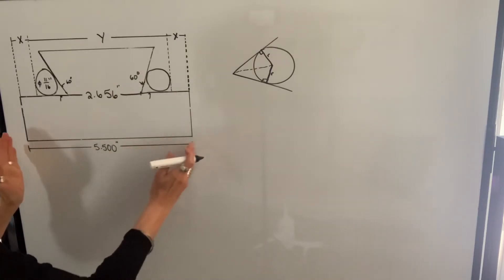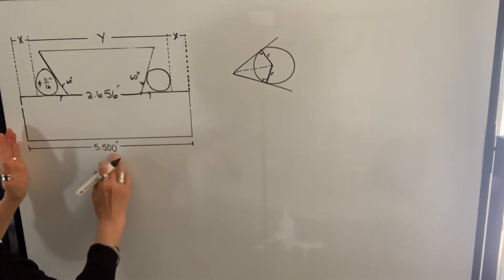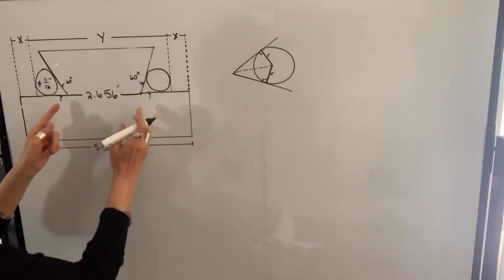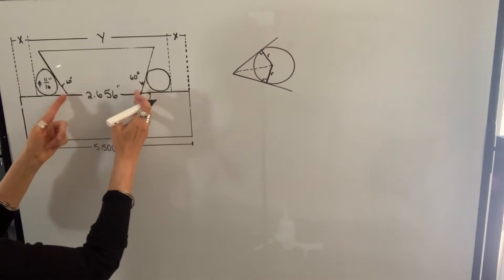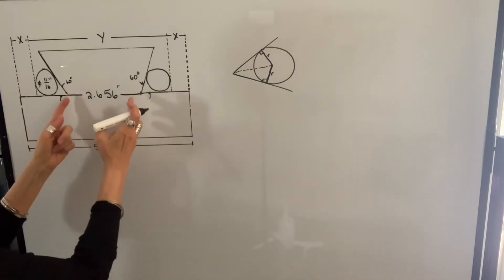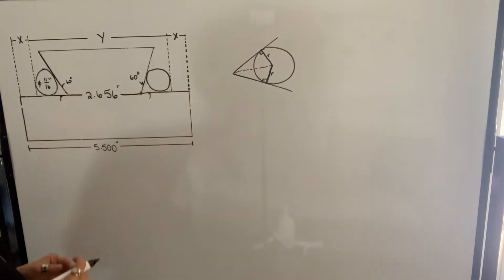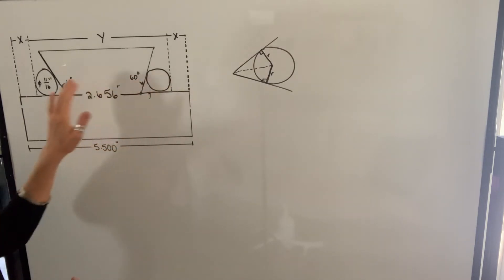You're going to be given this length here, which is 5.500 in this case. On your blueprints, you're going to also know what this length should be. But once this is machined, it's impossible for us to measure that. So that's why we're going to use these measuring pins.